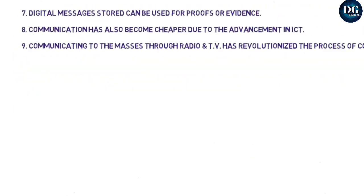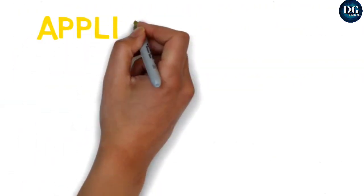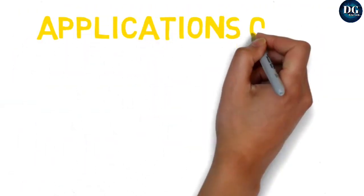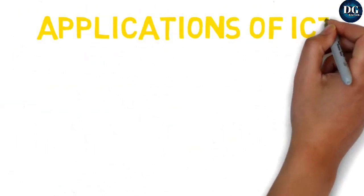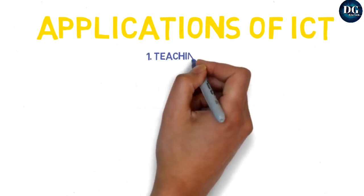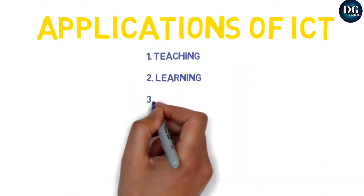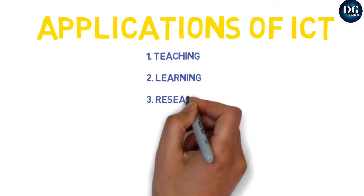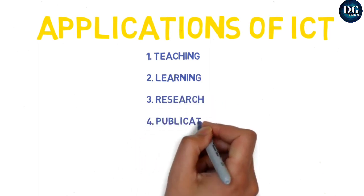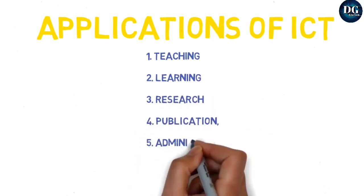Then come the applications of ICT. ICT can be applied in many areas. First is teaching. Second is learning. Third is research. Fourth is publication. Fifth is administration. And sixth is evaluation. These are the six main applications of ICT.